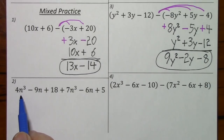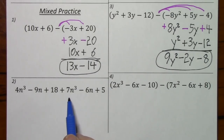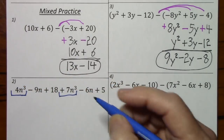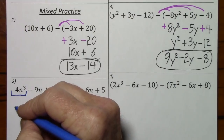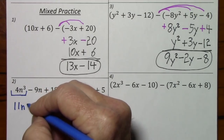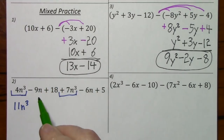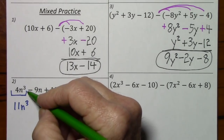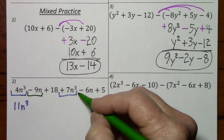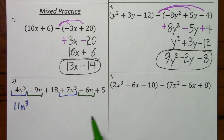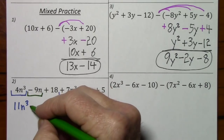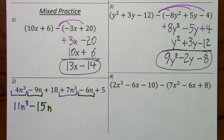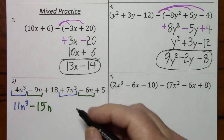Looking at this one, we have an n to the 3rd and an n to the 3rd — this gives us 11n to the 3rd. We have an n to the 1st and an n to the 1st, so that combines to give us negative 15n. And then we're left with the 18 and the 5.